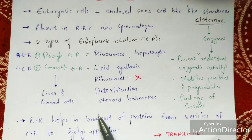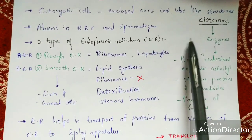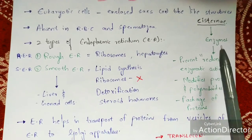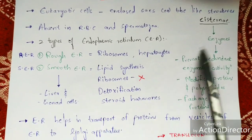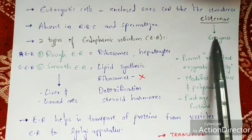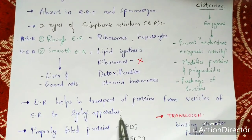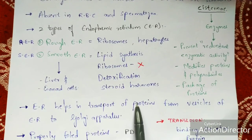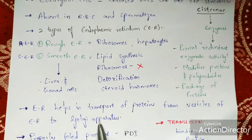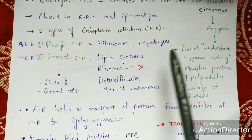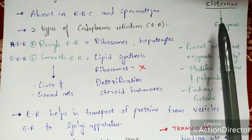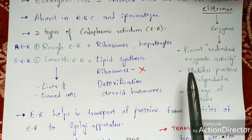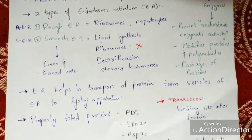Once proteins get transported into the Golgi apparatus, modification of the proteins takes place in the cisternae. The cisternae are present in the Golgi apparatus, and the packaging and modification of proteins takes place there.